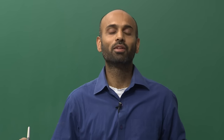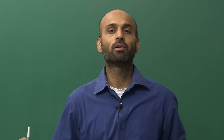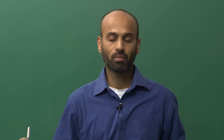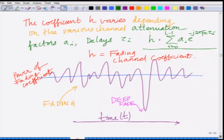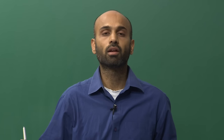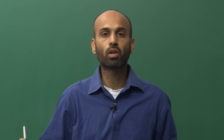Hello, welcome to another module in this MOOC on principles of CDMA, MIMO, OFDM wireless communication systems. In the last module we had seen this fading channel coefficient h, which depends on the attenuations and delays of the different paths, and we said that this fading channel coefficient has an important role to play in a wireless communication system. Today we are going to develop models for this fading channel coefficient.